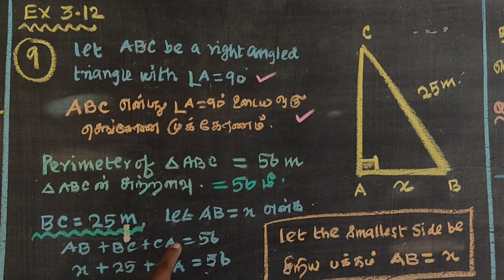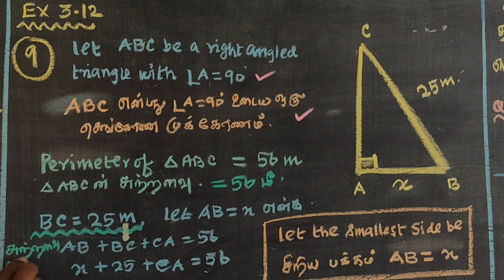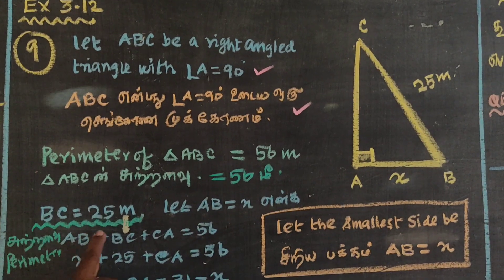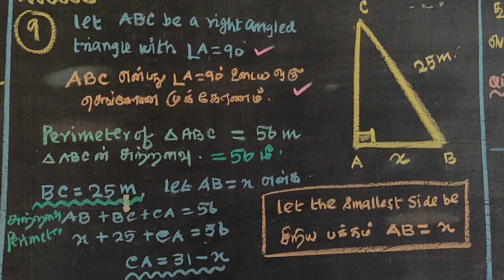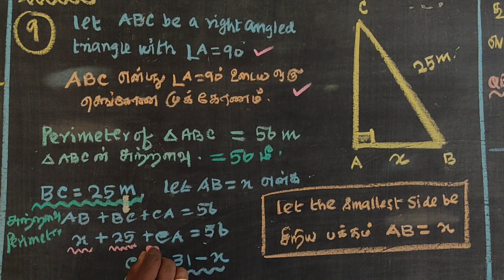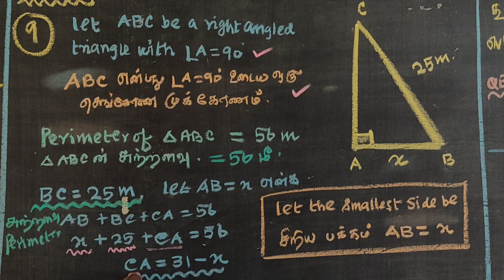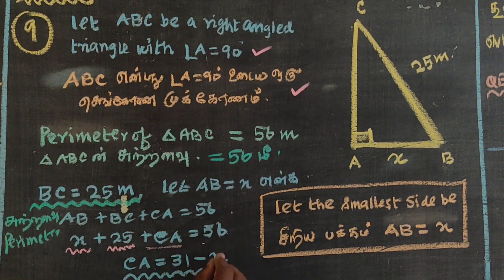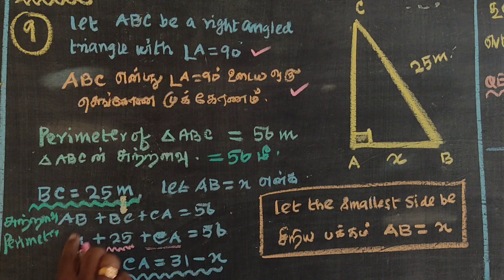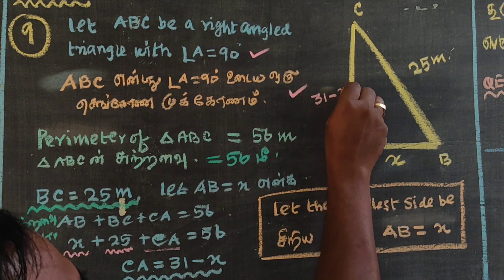AB plus BC plus CA is equal to 56. This is the perimeter. AB we call x, BC plus 25, so CA equals 56 minus 25 minus x, which is 31 minus x. So the value of CA is 31 minus x.